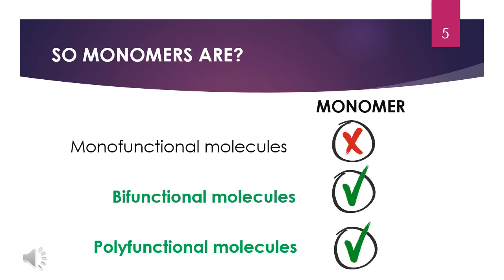A molecule can be classified as monofunctional — molecules with one functional group or active site — bifunctional — molecules with two functional groups or two active sites — or polyfunctional — molecules with more than two functional groups or active sites. Note that monomers can only be bifunctional or polyfunctional.